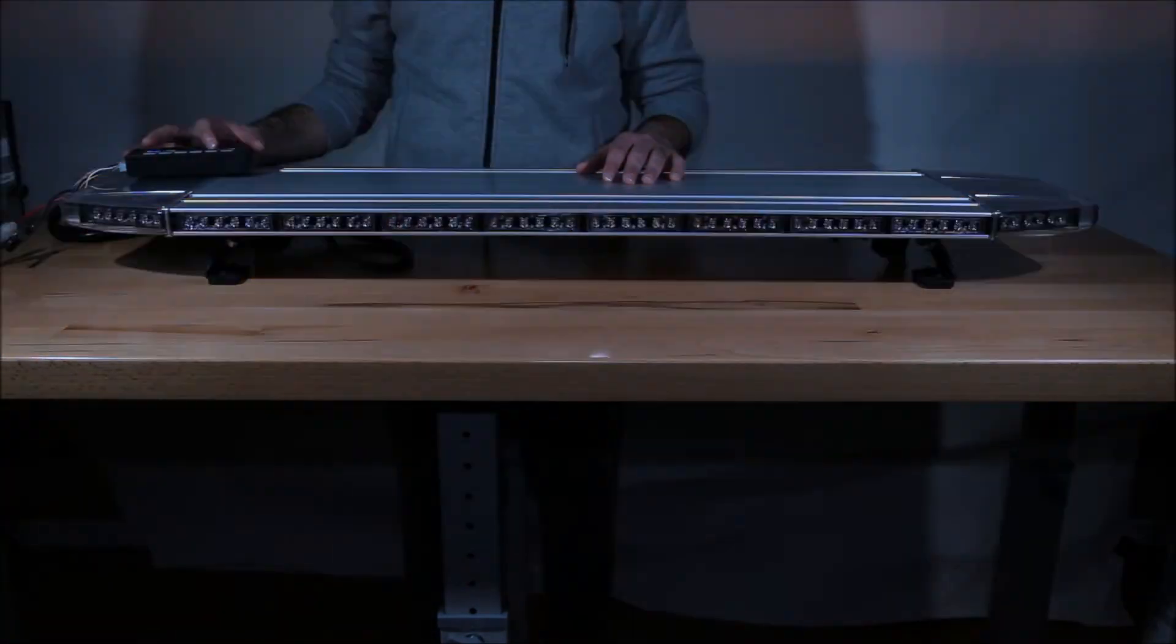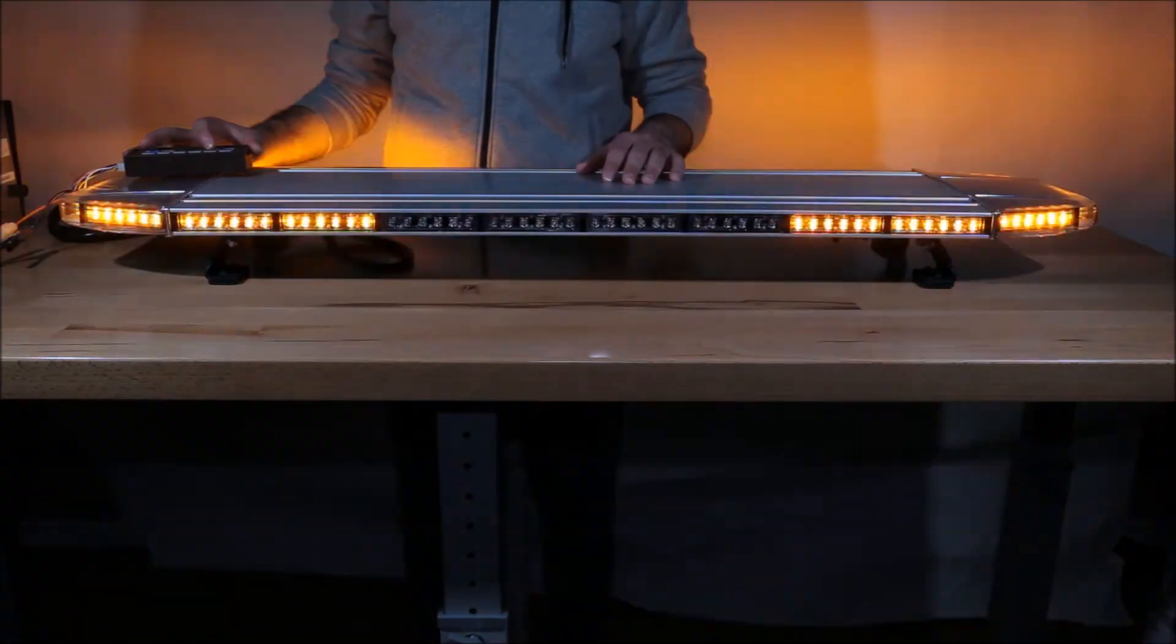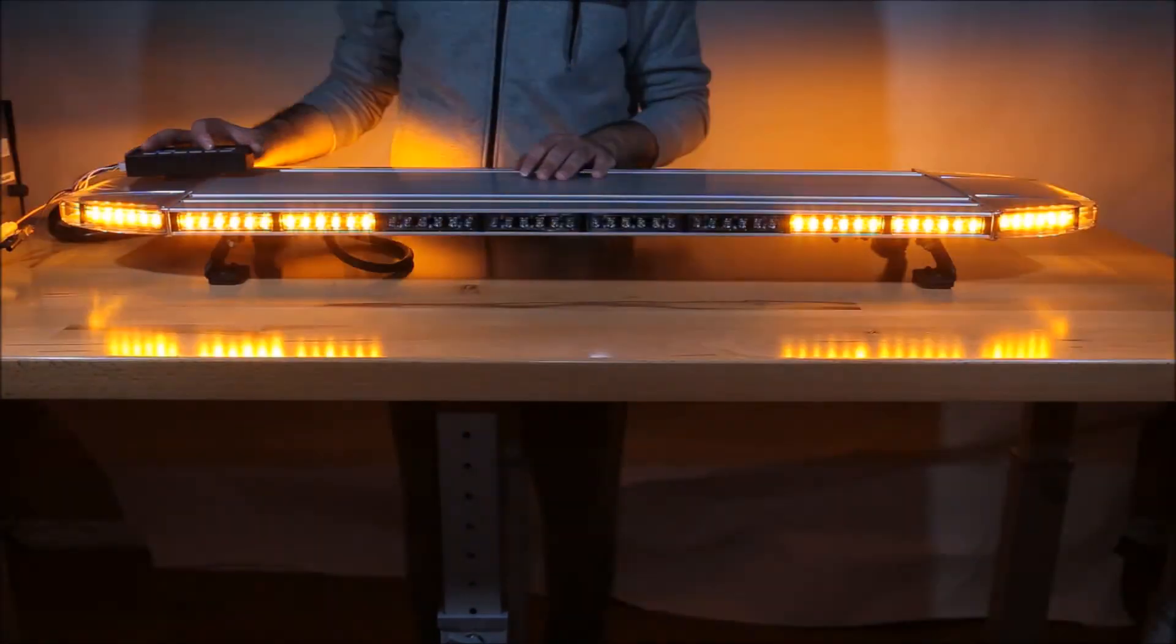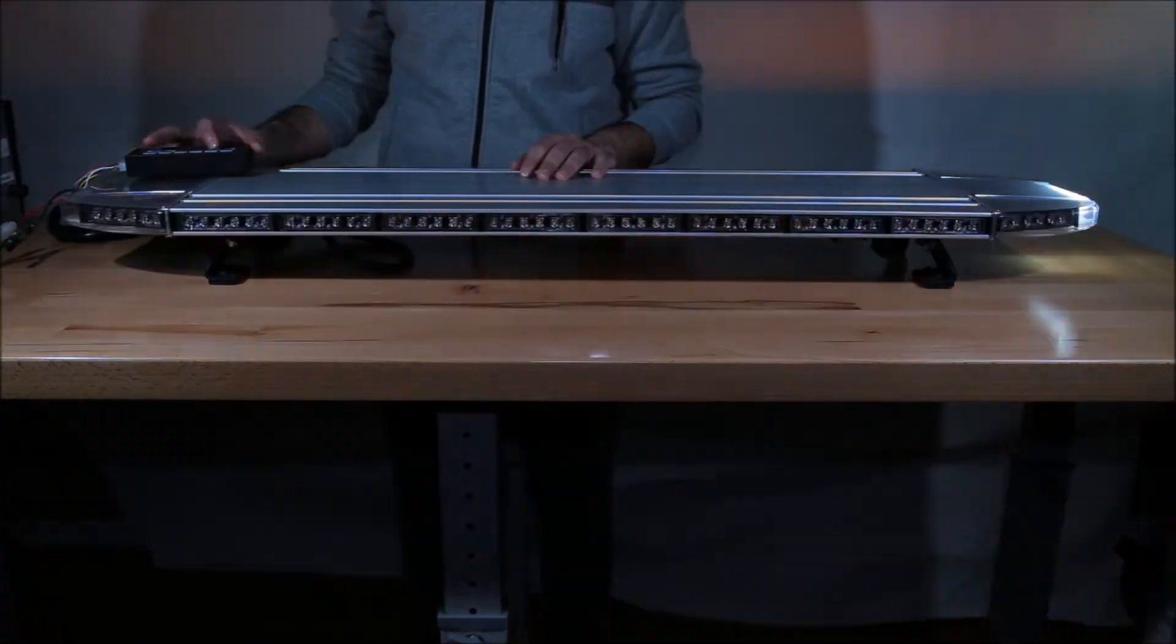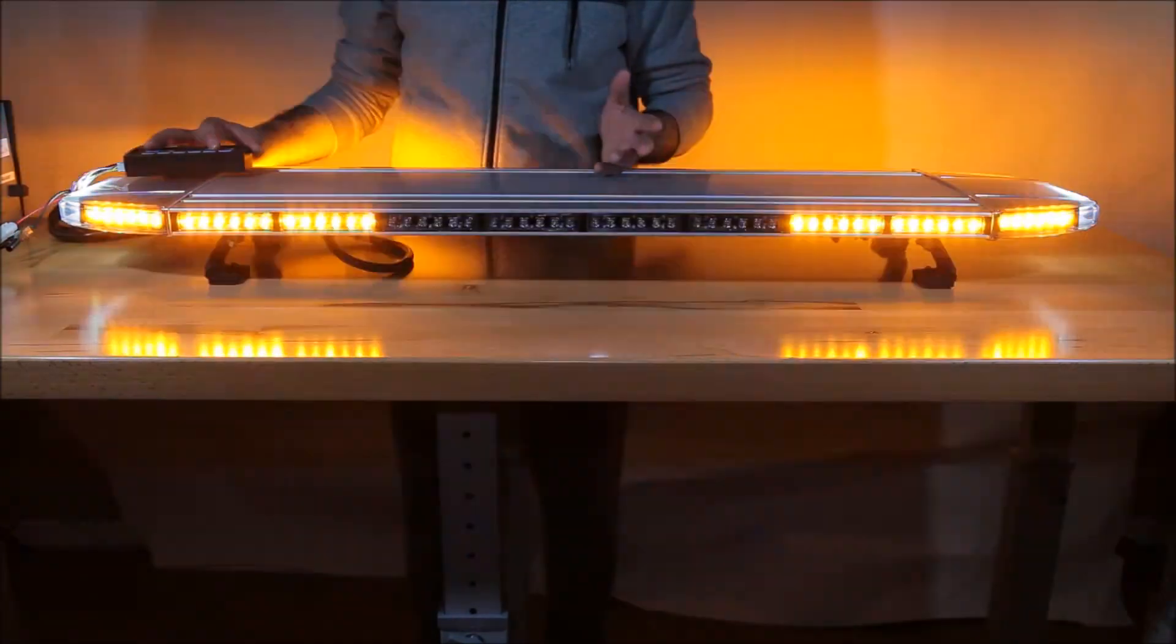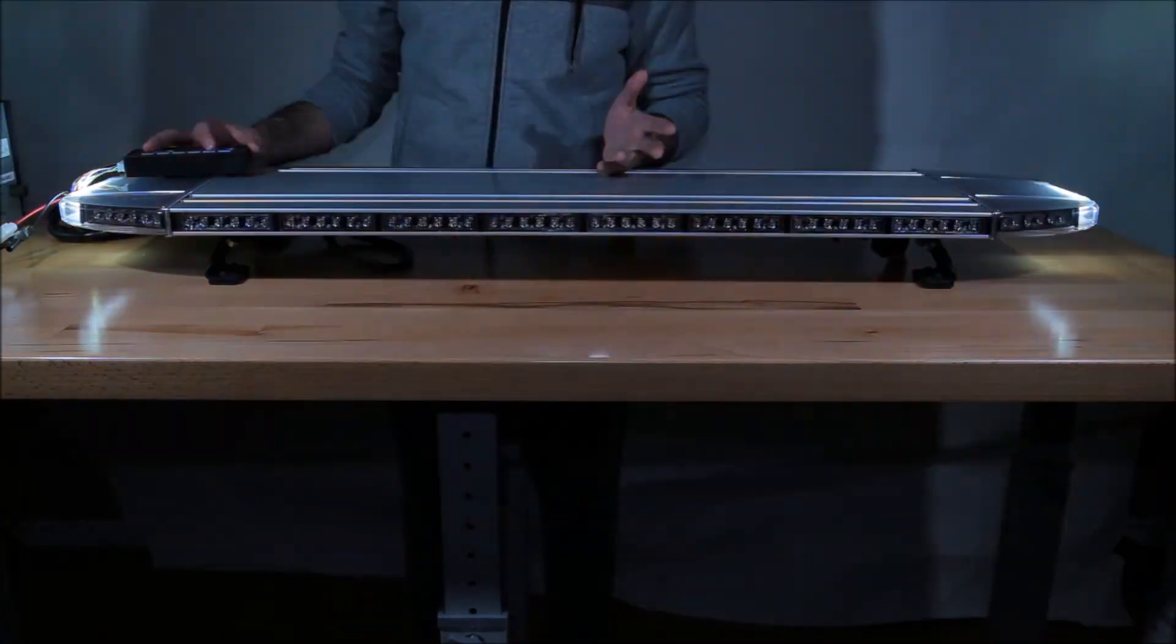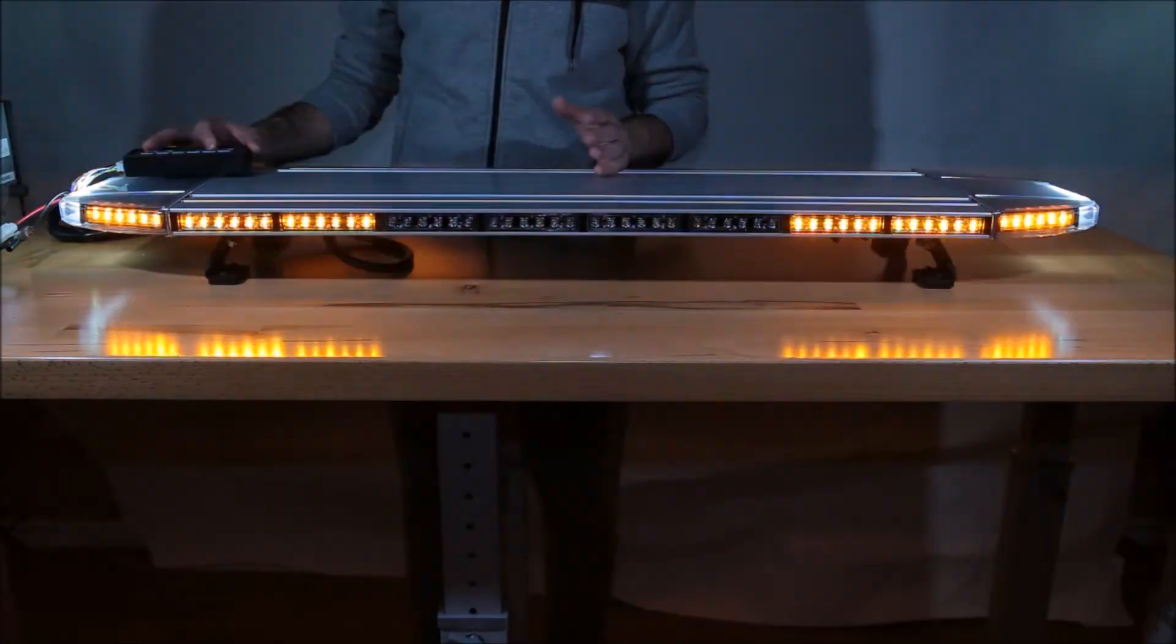One more added feature which I discussed before, the dual color alleys. Right now the alleys are going to be amber. With a flick of the button they turn white. And now you have white alleys on any of these light bars in any color.